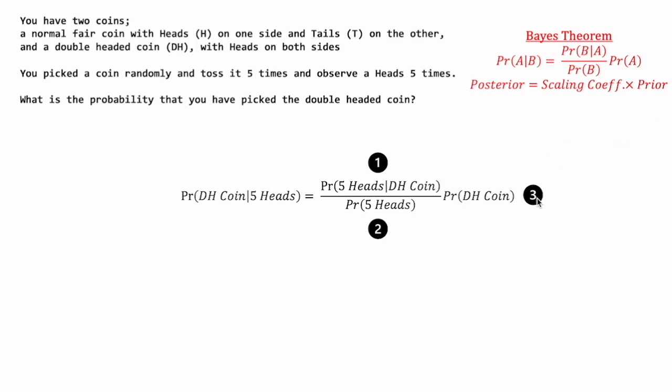Now, bringing all the pieces together, this gives us the probability of getting a double-headed coin given that we have flipped five heads, being 0.96, or a 96% probability.